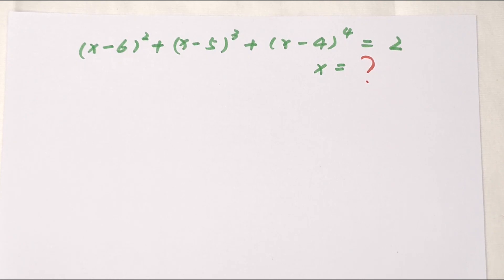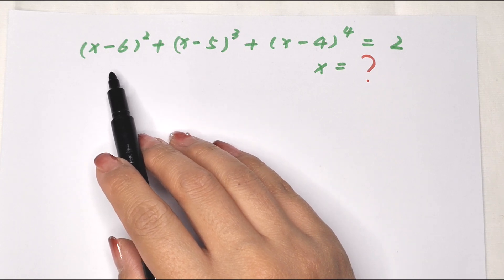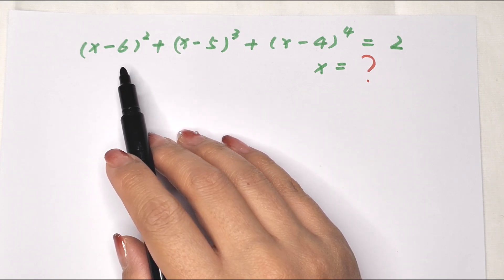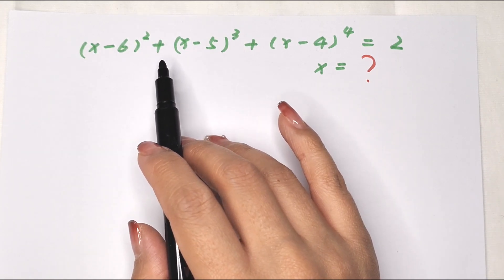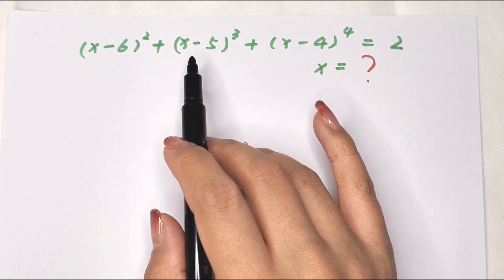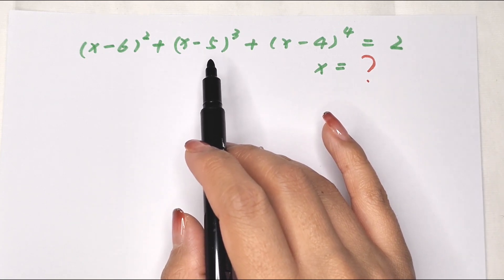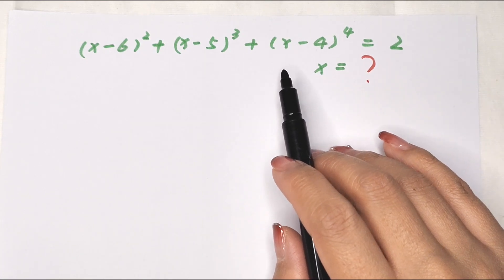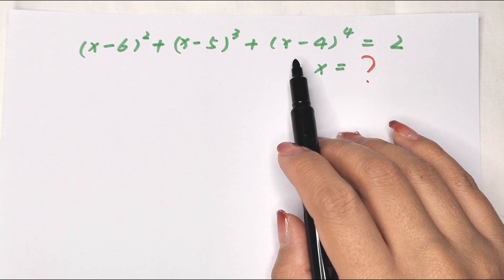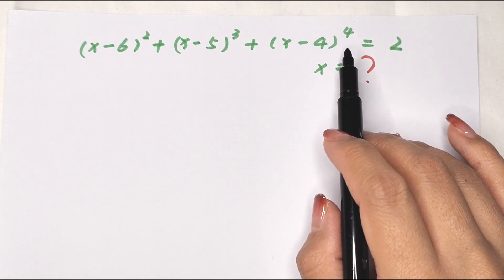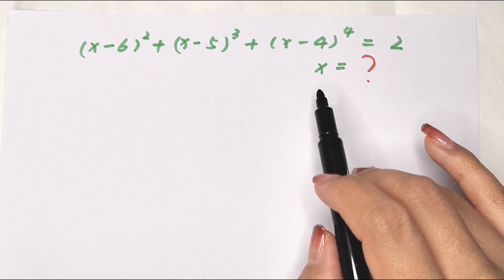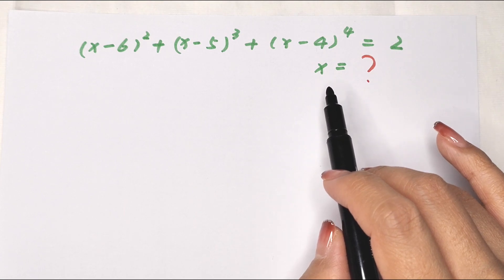Hello everyone, welcome to Math4U. How to solve (x minus 6) bracket to the power of 2 plus (x minus 5) bracket to the power of 3 plus (x minus 4) bracket to the power of 4 equals 2, then to find the value of x.